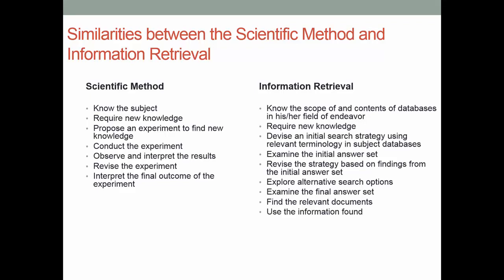With information retrieval, you need to know the scope and the contents of the databases in the field. You're looking for new knowledge — you want to make sure that nobody has done your research before you. You devise an initial search strategy based on relevant terminology in the subject databases. This really only takes seconds. You examine the initial result set and see if it's on the mark. If it's not, you need to revise the strategy based on the findings from the initial answer set. You may have to use different terms or a different database, and then you examine that final answer set and use the information you found.